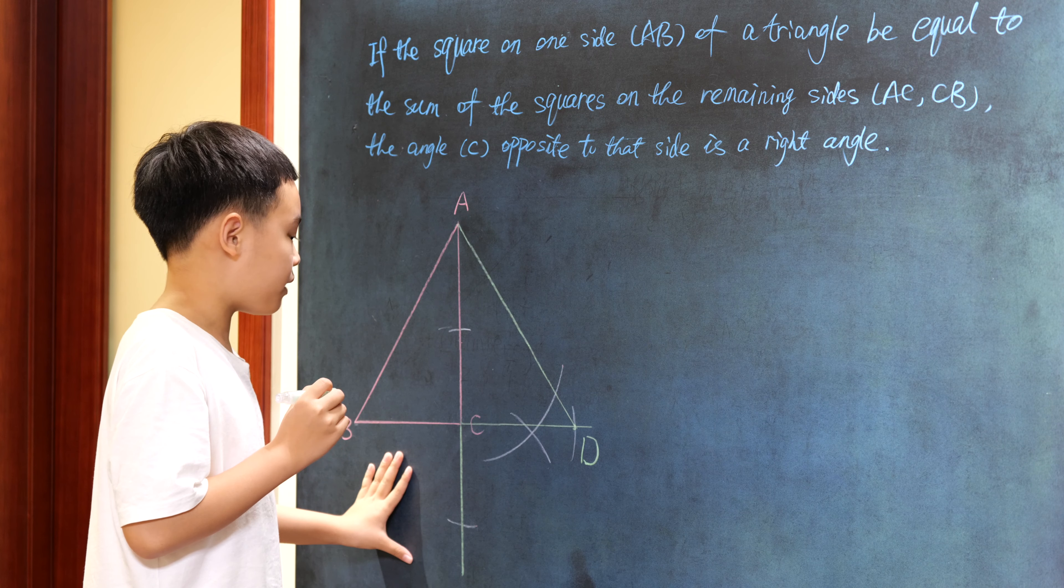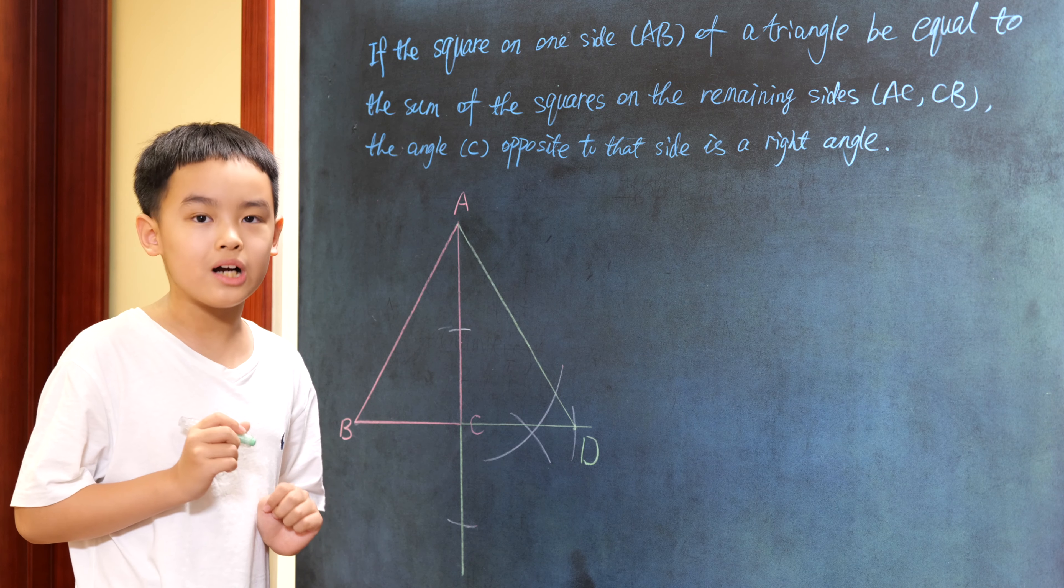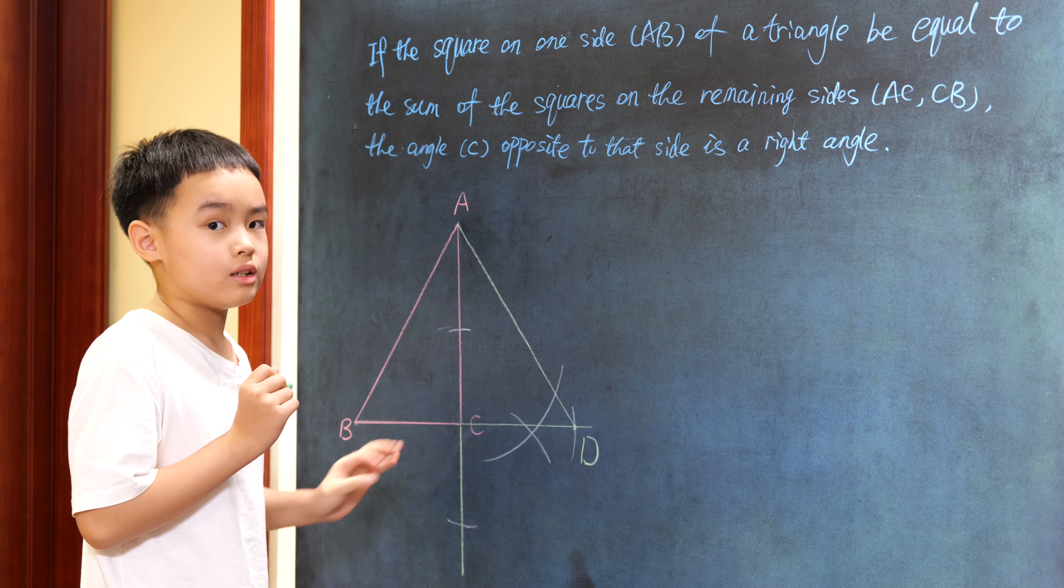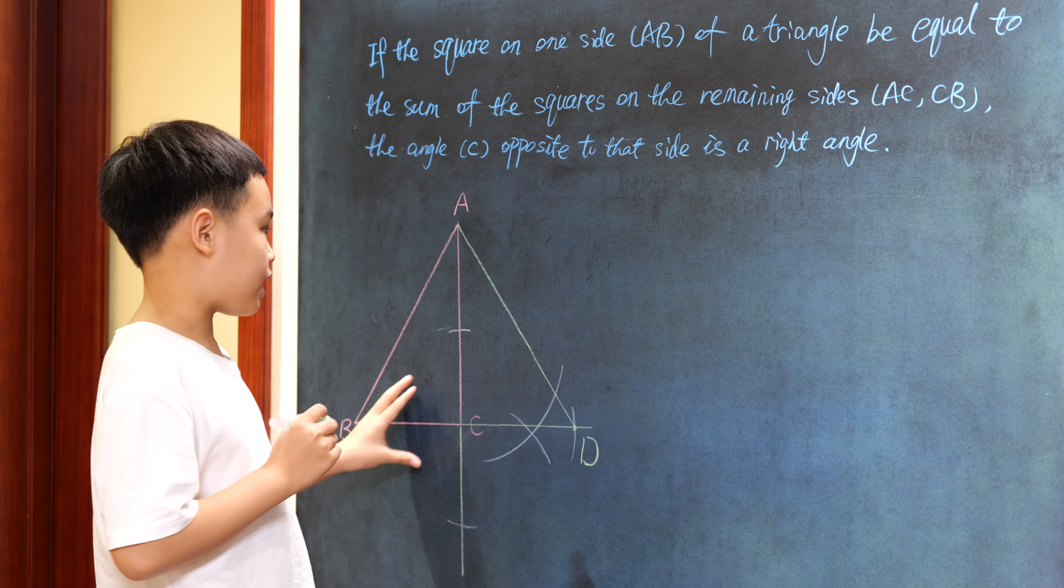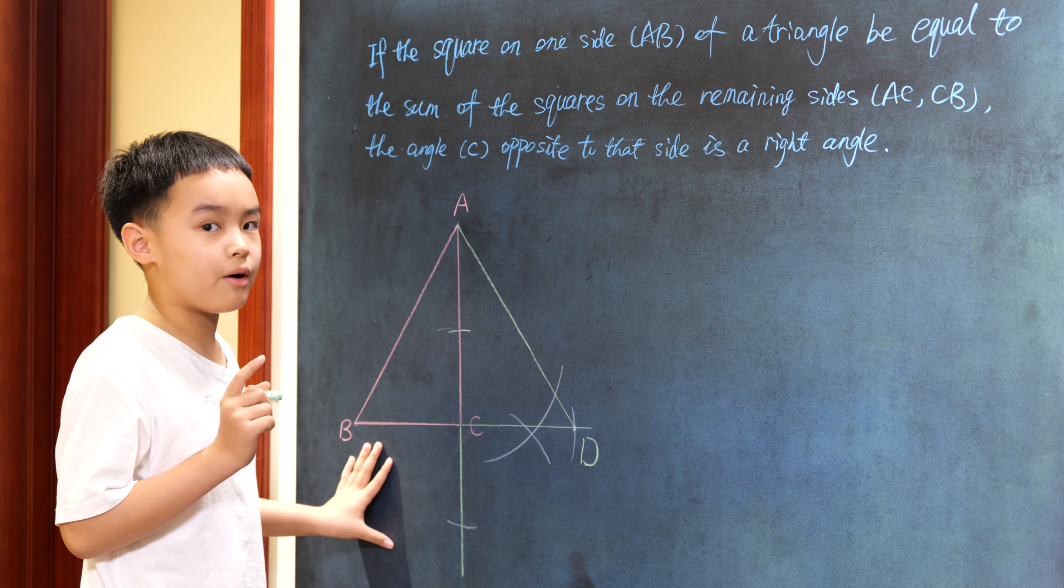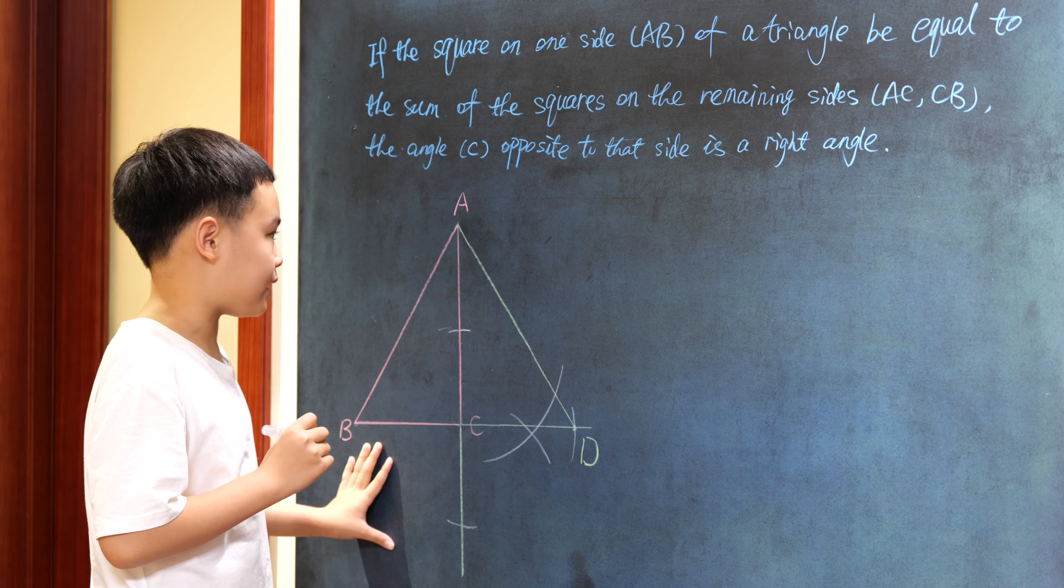But, since triangle ACD is a right-angled triangle, the square on the line AD shall be equal to the sum of two squares on two lines DC and CA.